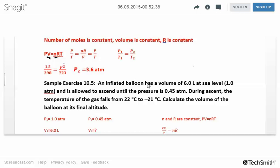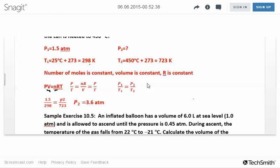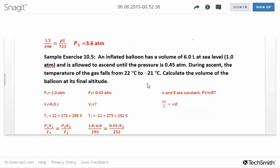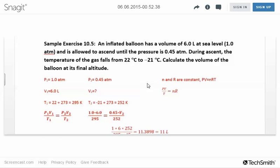So P₂, the second pressure, is 3.6 atmospheres, which makes sense. Our temperature increased, so our pressure also increased. They're directly proportional. Sample exercise 10.5: An inflated balloon has a volume of 6 liters at sea level, which is 1 atmosphere. It ascends until the pressure is 0.45 atmospheres. During ascent, the temperature falls from 22 to negative 21 Celsius. Don't forget that negative sign.